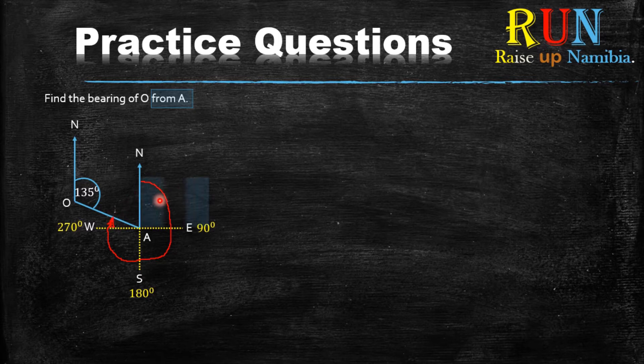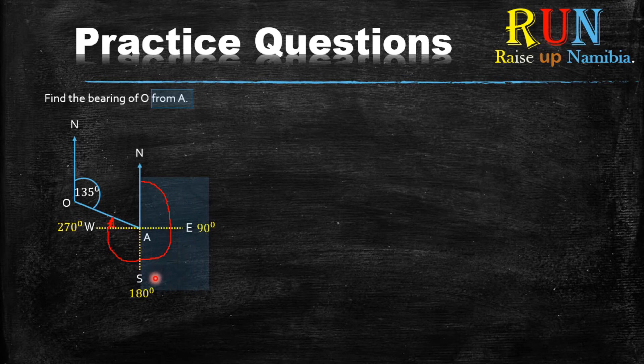So now you know already that this is 90 degrees, this is 180, this is 270, and then we have a little gap here which we don't know. This gap. Now this type of question is really easy but can be a bit tricky because notice that we know that we are looking for this angle.